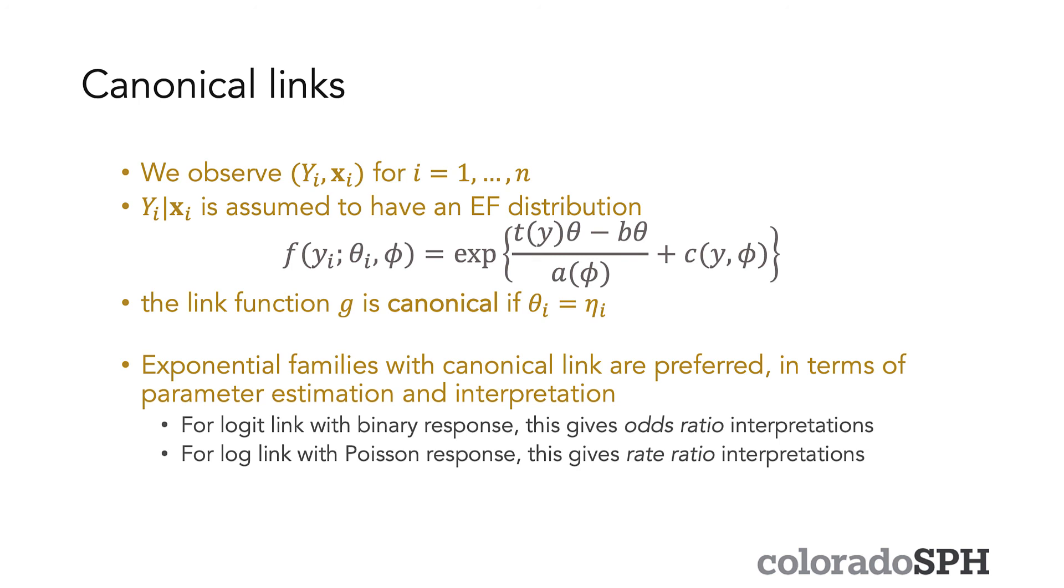In terms of the actual interpretation, if you use the logit link for a binary response, which is the canonical link for the Bernoulli, this gives an odds ratio interpretation. For the log link with a Poisson response, this gives a rate ratio interpretation. And we're going to go over both of these in practical examples in more detail in the next several lectures.